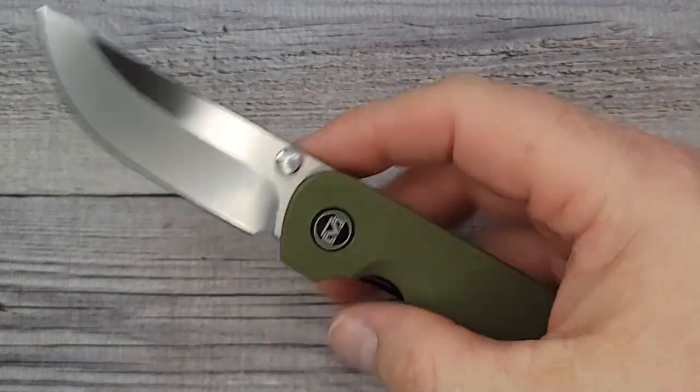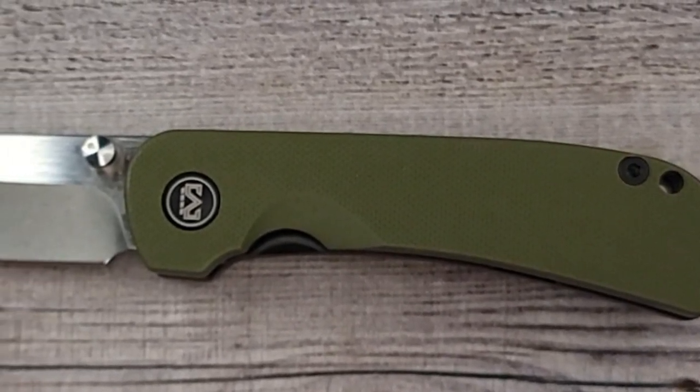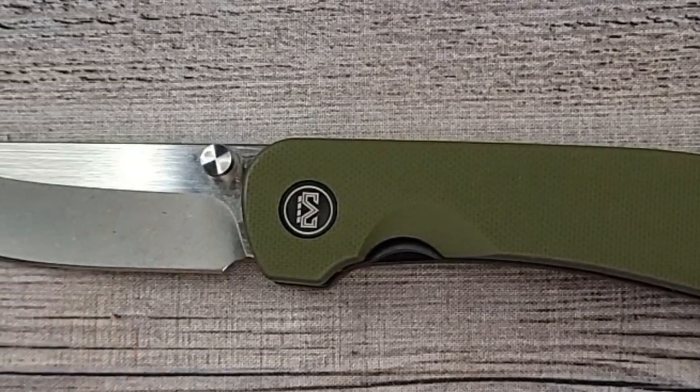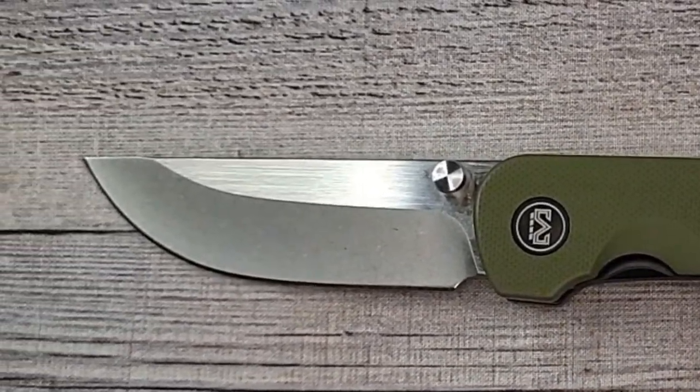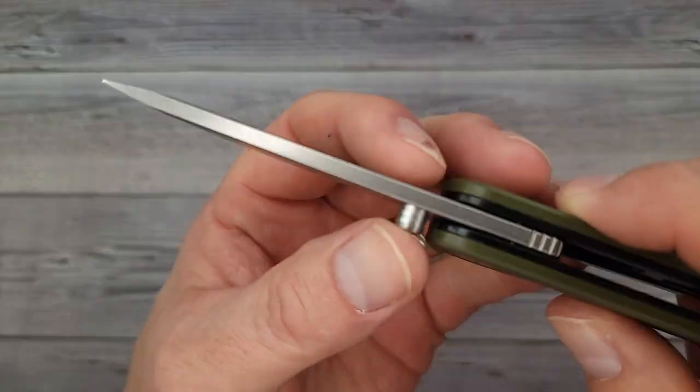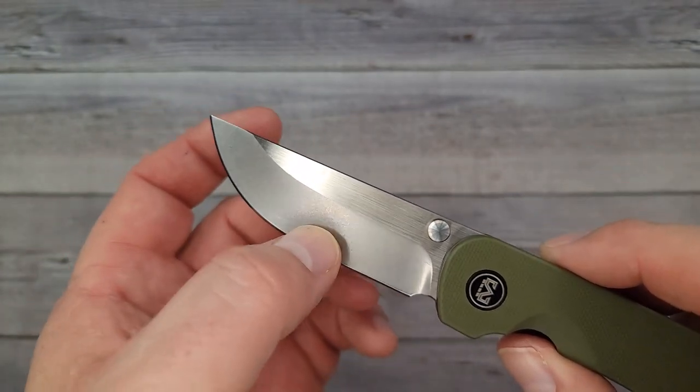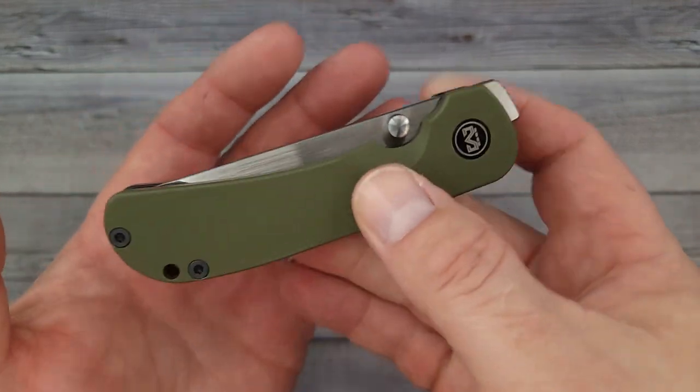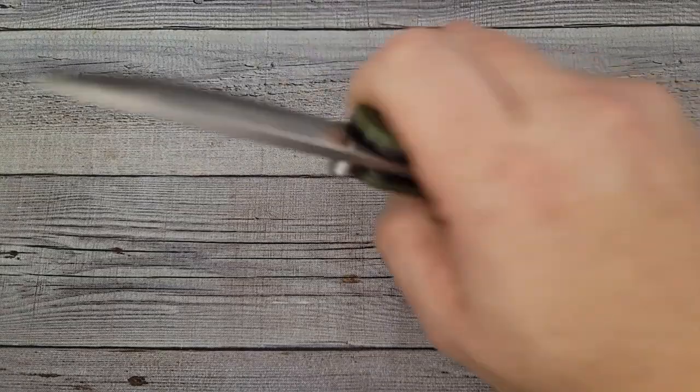These are like 39 bucks, you can get black or the OD green. This one here, it's 6.9 inches overall, the blade length under that three inch mark - it's 2.9 inches. Closed it's 4.2 inches. Your blade stock thickness on this one's 141 thousandths of an inch, and then behind the edge 21 thousandths of an inch. It comes in right at four ounces, 4.01 to be exact.